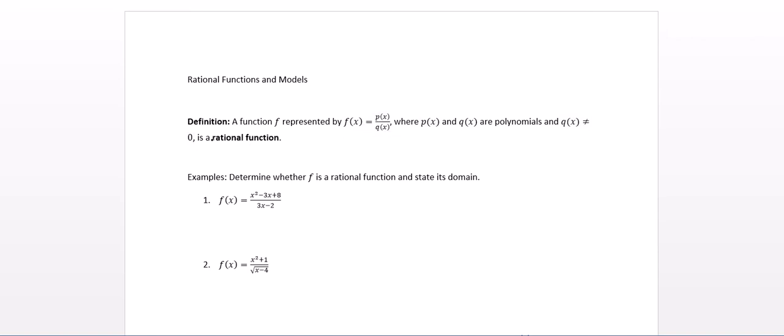So it has to be a ratio of polynomials. Determine whether f is a rational function and state its domain. So here we see in number one, I have a polynomial, a quadratic, divided by a polynomial, which is a linear function. So this is a rational function. And if we look more carefully here, q of x is not equal to zero tells us how to find the domain. We take the denominator and set it not equal to zero. 3x cannot be 2, so x cannot be 2 thirds.